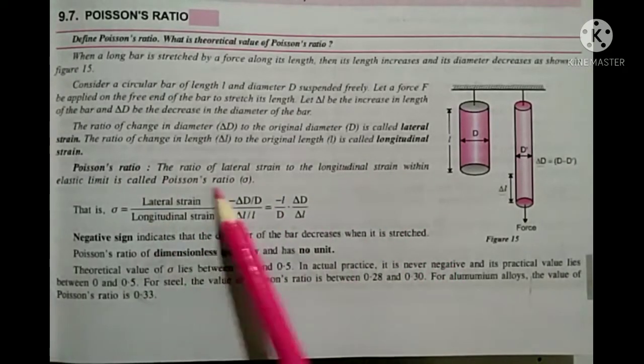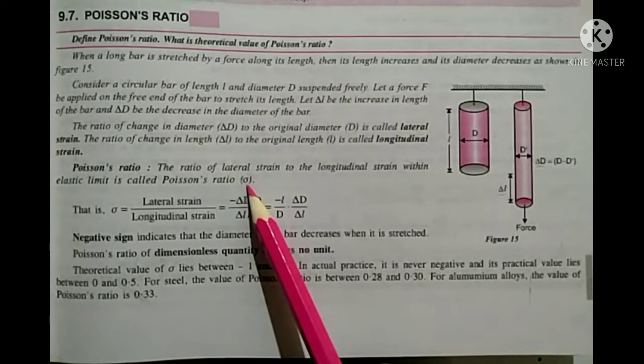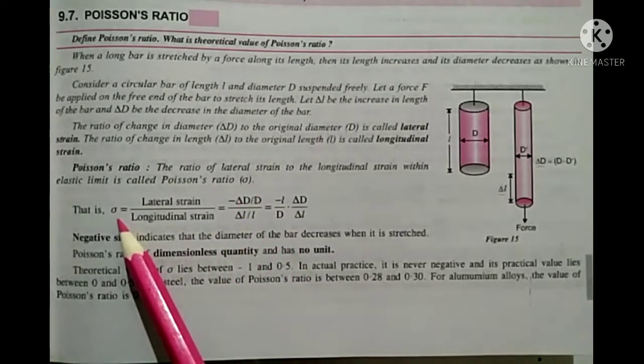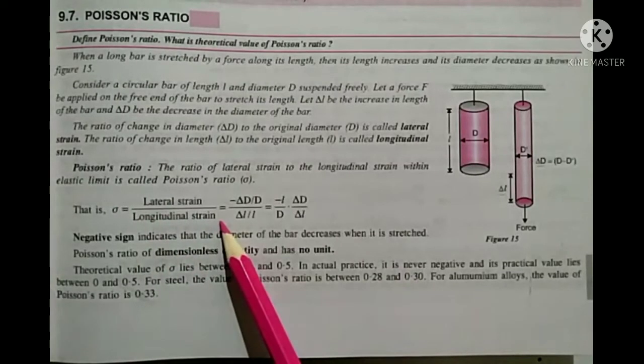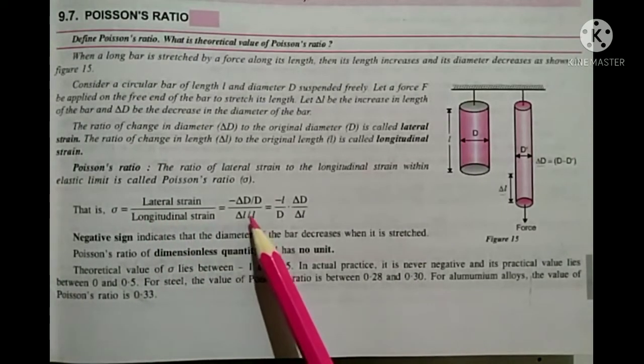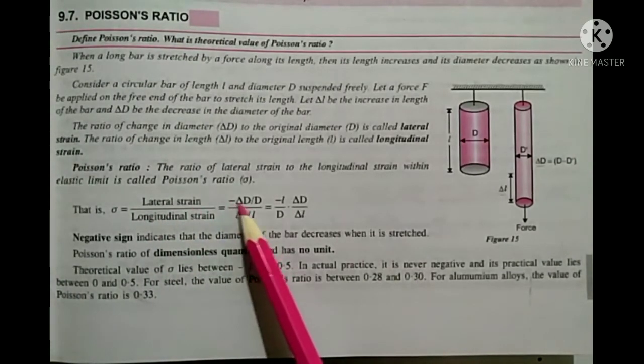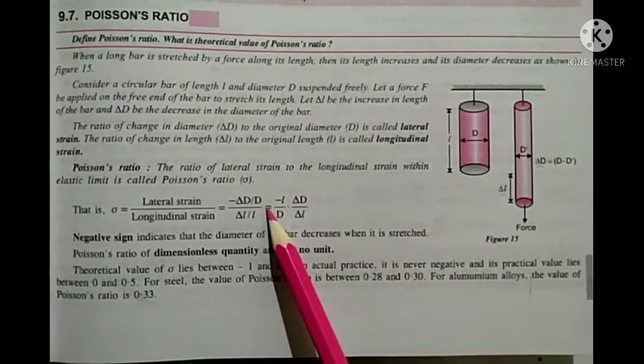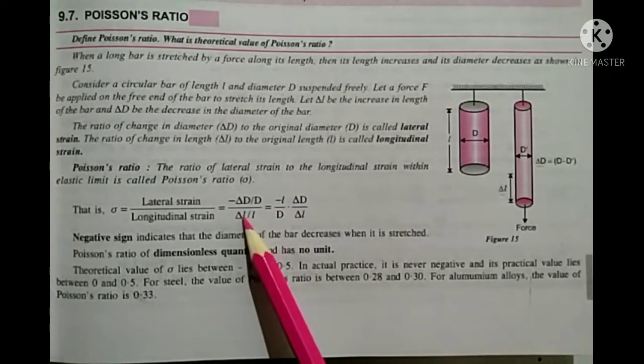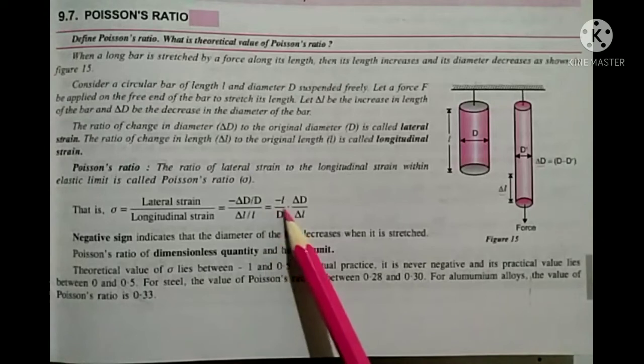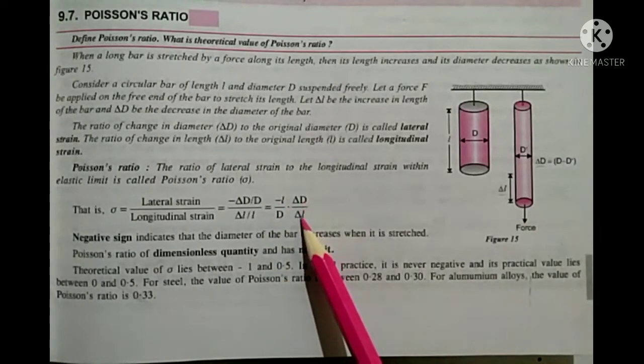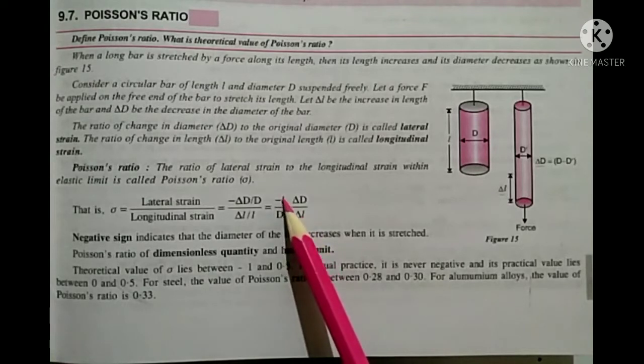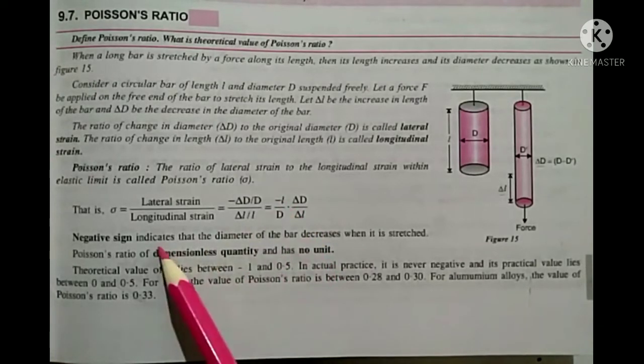Within the elastic limit, Poisson's ratio is sigma equals lateral strain over longitudinal strain. Lateral strain is minus del D over D, longitudinal strain is del L over L. This equals minus L over D multiply del D over del L. The negative sign indicates that the diameter of the bar decreases when it is stretched.